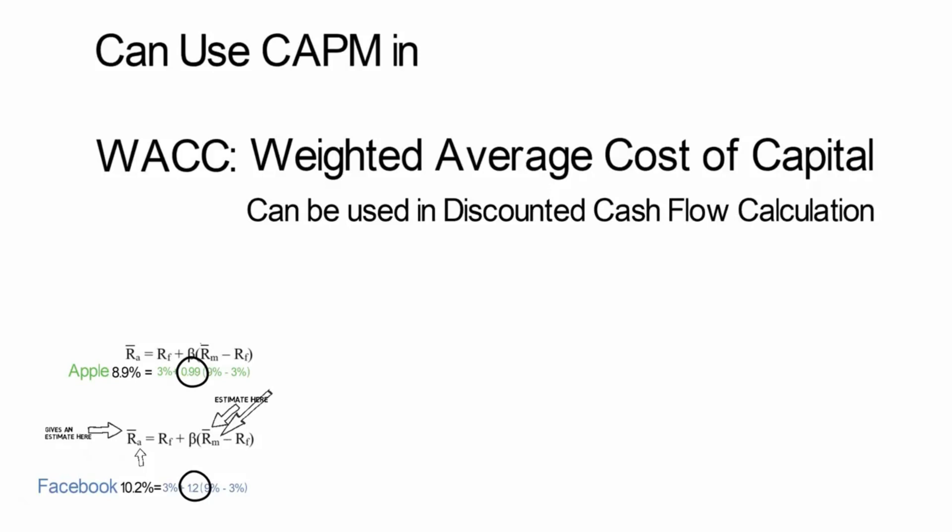And that WACC can be used as a discount factor to value a stock in something like discounted cash flow. Now technically, for WACC, you would use both the cost of debt and the cost of equity. CAPM can be used as a cost of equity. So for a quick illustration as to how it can be used, let's imagine that Apple and Facebook have no debt, which means that WACC for both of them is same as CAPM.